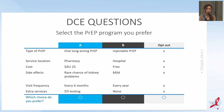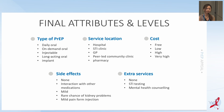Here is an example of a DCE question from our survey. Participants were asked to choose between PrEP program A and PrEP program B, each consisting of different attribute levels, and they could also choose to opt out. Here are the final attributes and attribute levels included in our survey — the full list is available in our full report, the link to which will be provided at the end of this presentation.